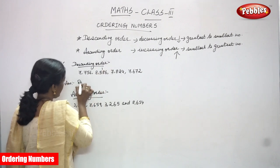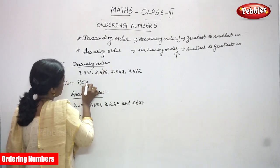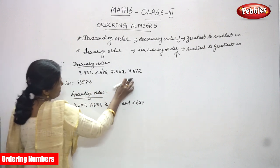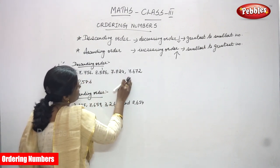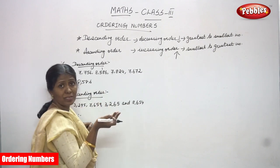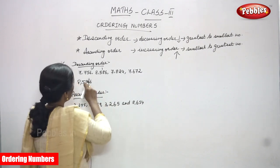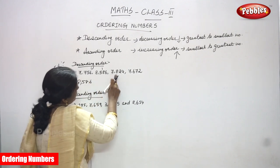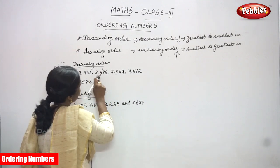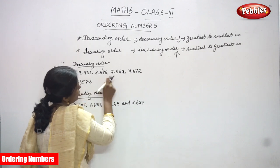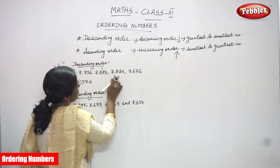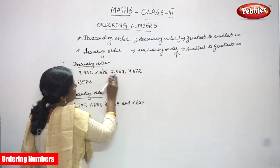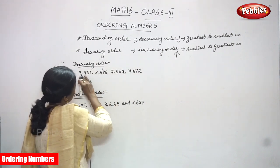Next, the remaining three numbers all start with seven thousand: 7756, 7824, and 7672. Since the thousands place is the same for all three, we now concentrate on the hundreds place value. The hundreds digits are 700, 800, and 600 respectively.